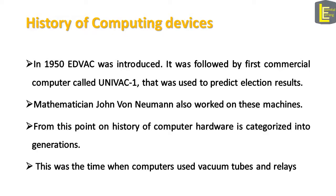In 1950, EDVAC was introduced. It was followed by the first commercial computer called UNIVAC-1, which was used to predict election results. Mathematician John Von Neumann also worked on these machines. From this point on, the history of computer hardware is categorized into generations. This was the time when computers used vacuum tubes and relays.